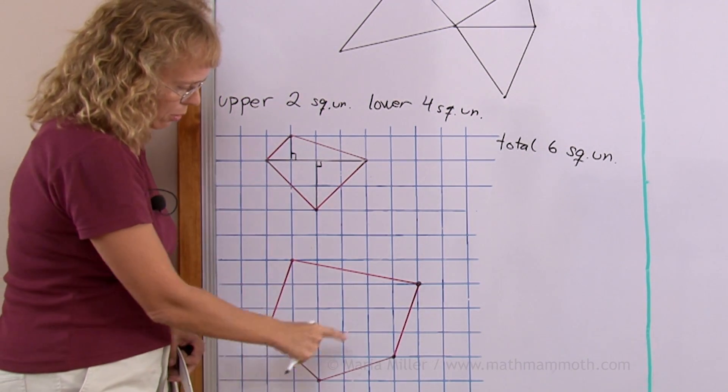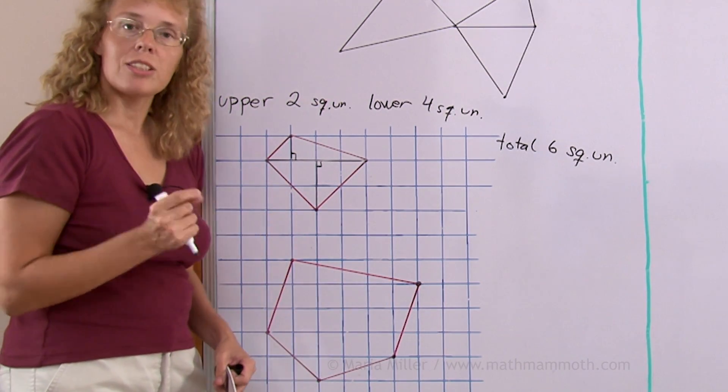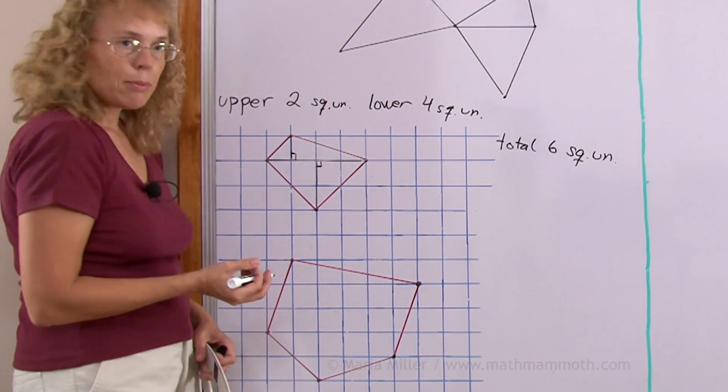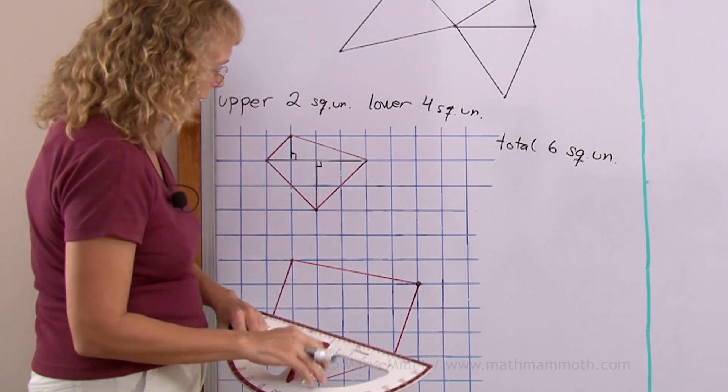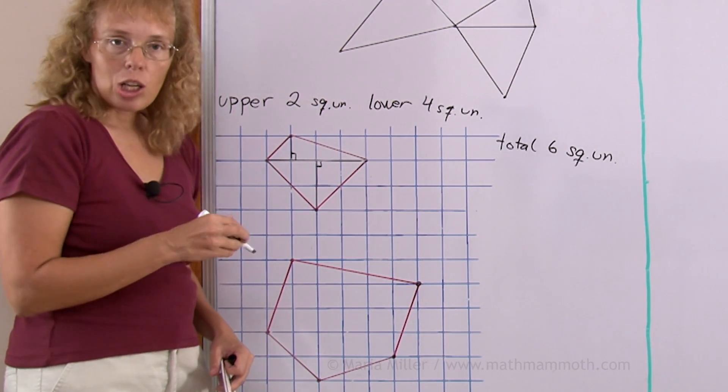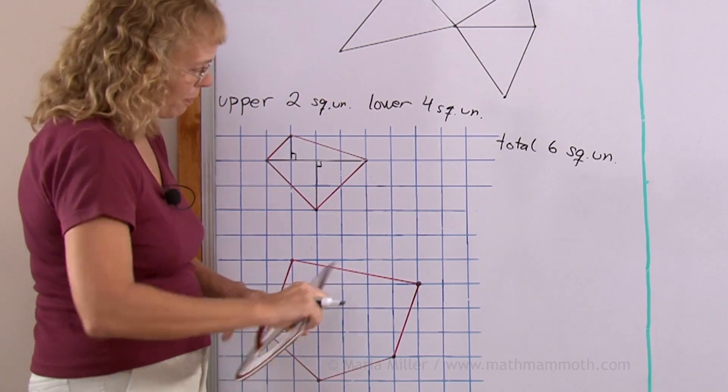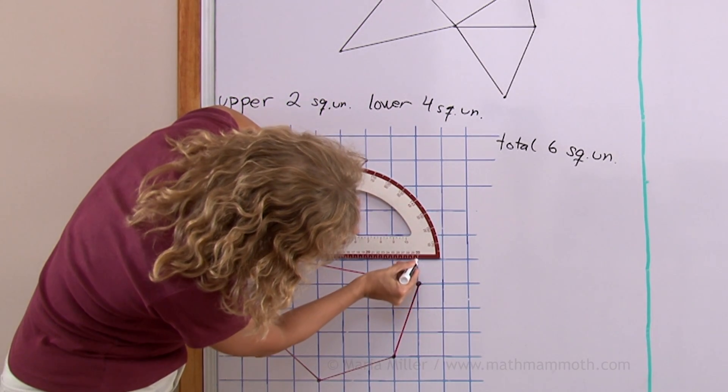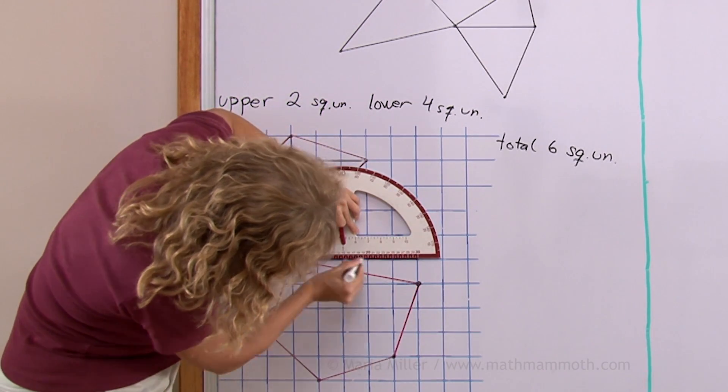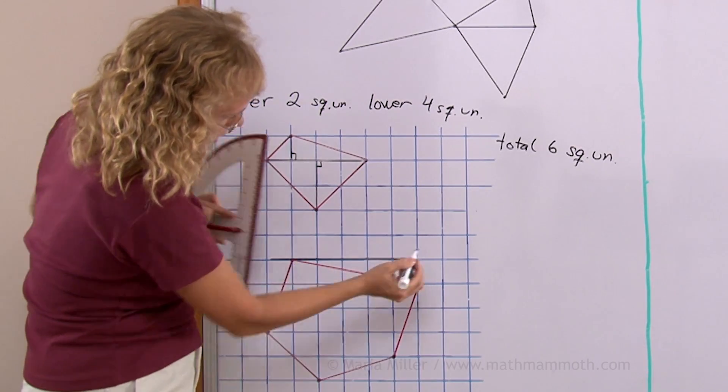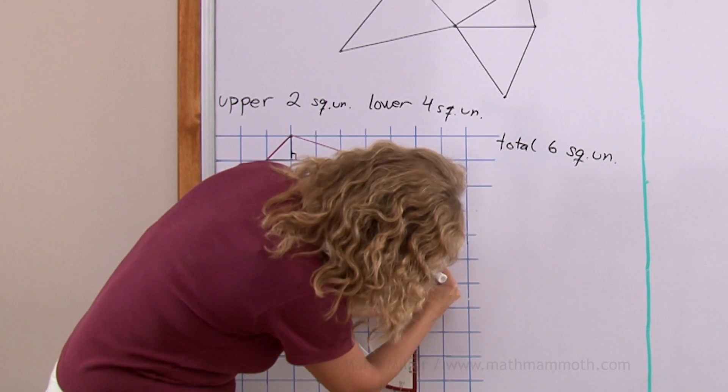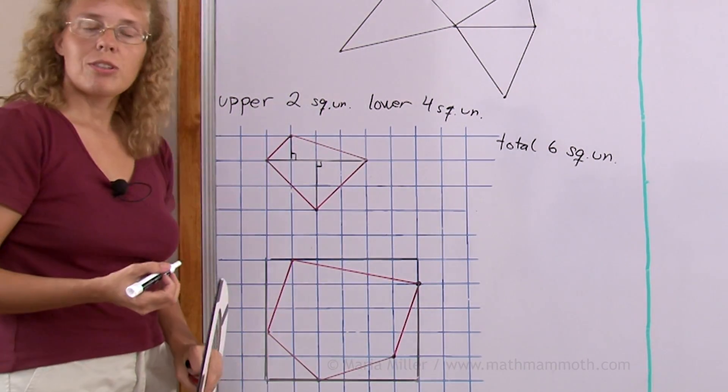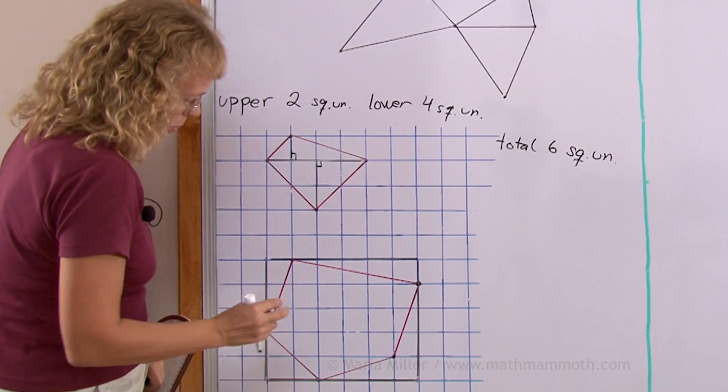Over here I have five vertices so it's a pentagon. I can again divide it into triangles but being in the grid I'll show you another method that I like and that is we will enclose it in a rectangle first. I'll draw a rectangle here so that as many vertices as possible will be touching the sides of that rectangle.